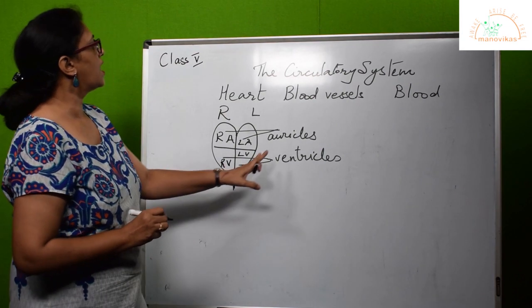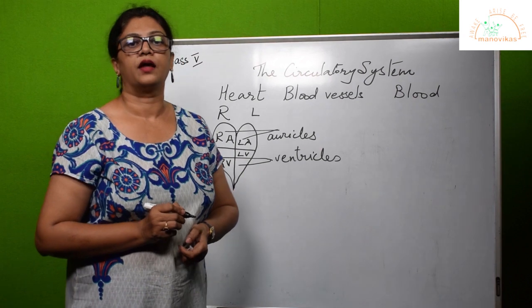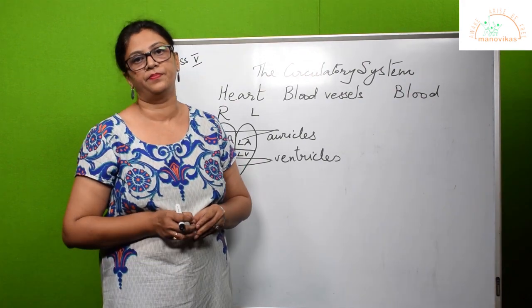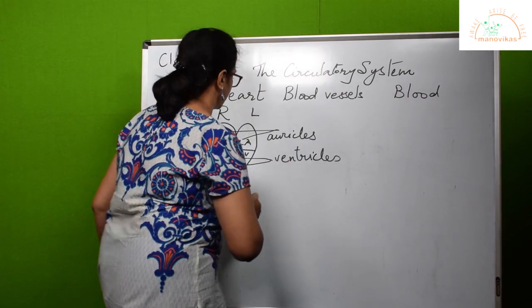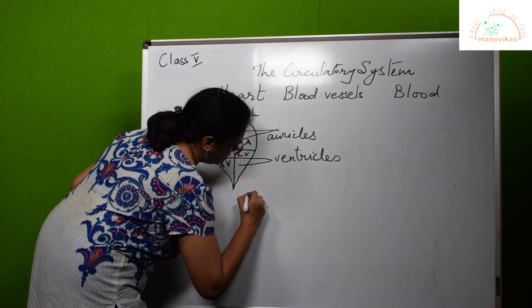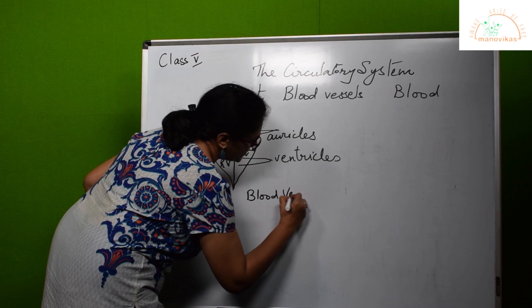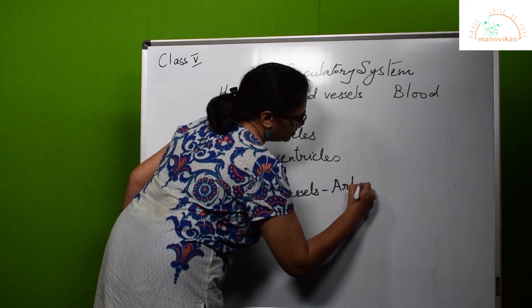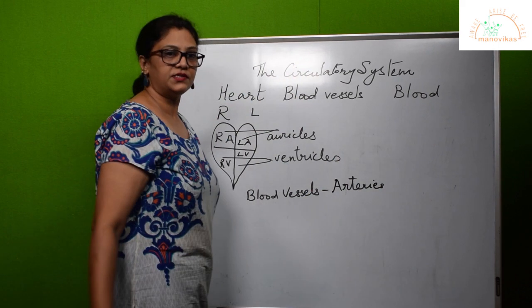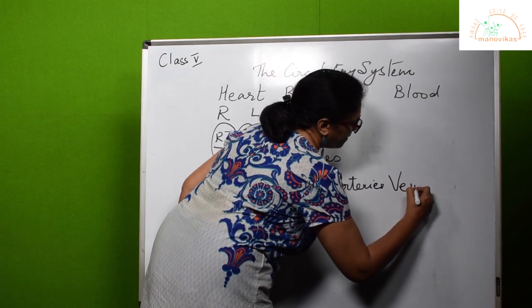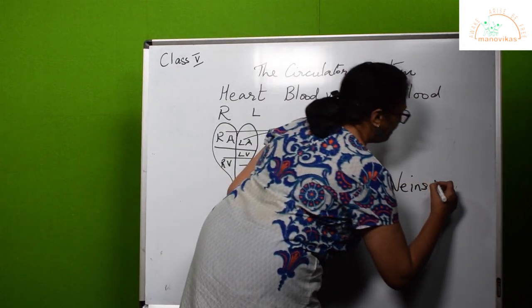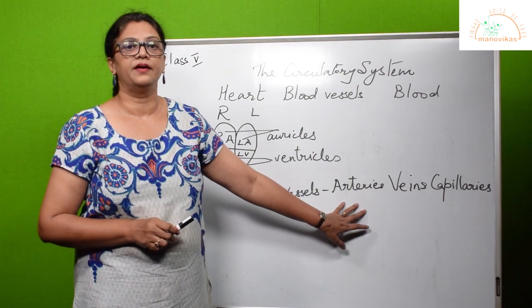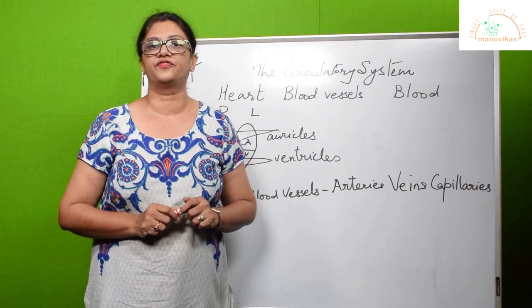Next we come to the blood vessels. There are three types of blood vessels. Blood vessels are the tubes that carry blood to the different parts of the body. The three types of blood vessels are arteries, veins, and capillaries. The arteries carry pure blood from the heart to the different parts of the body.